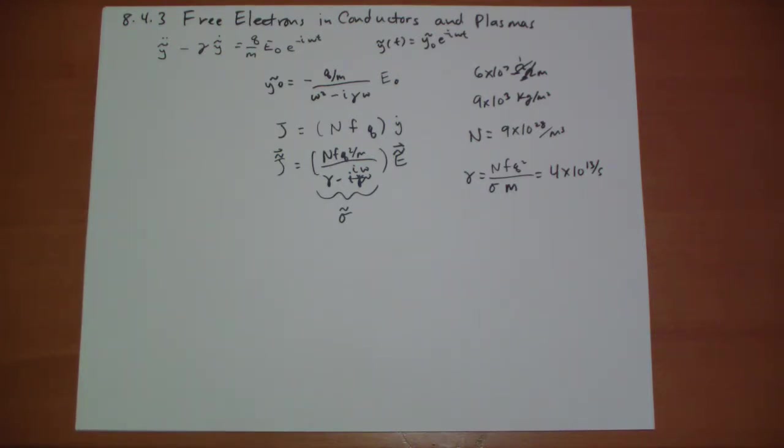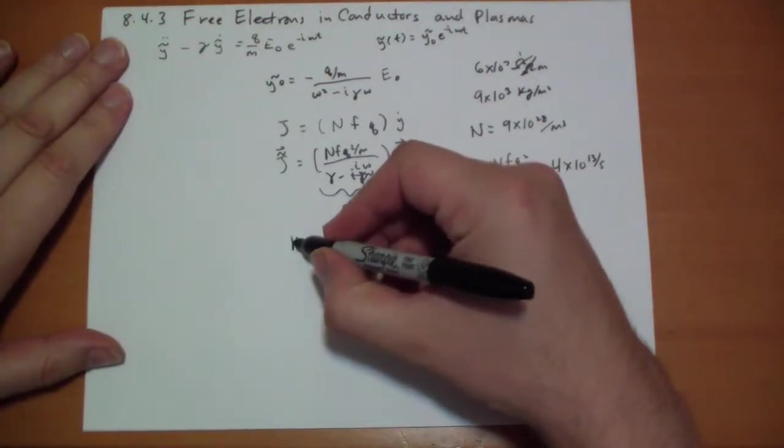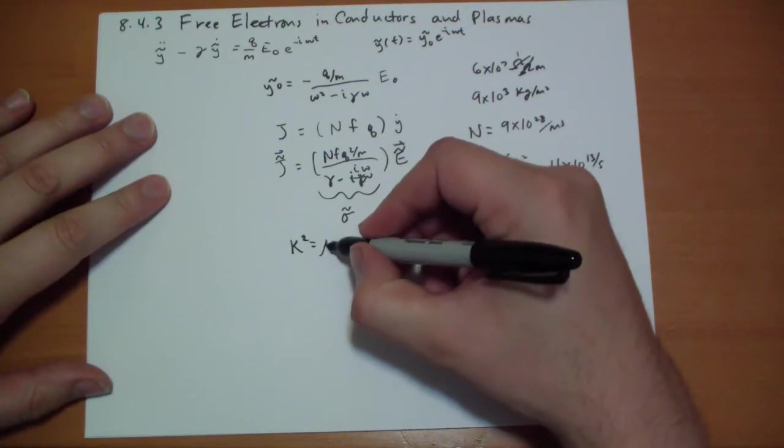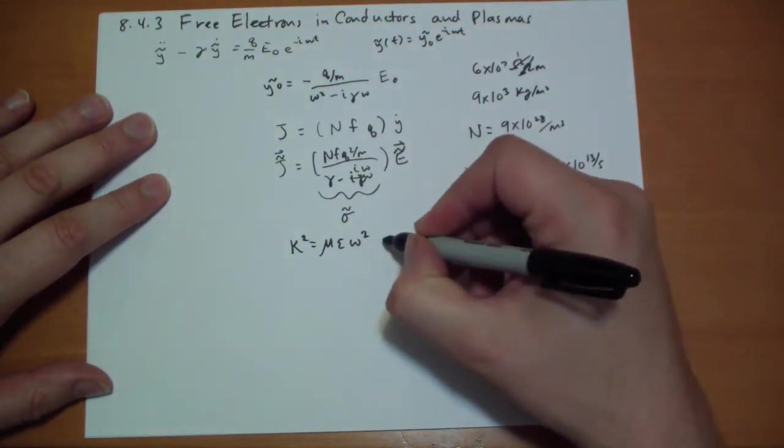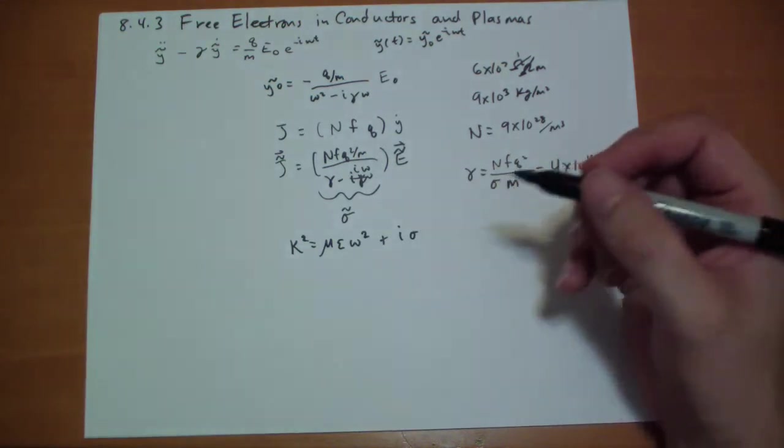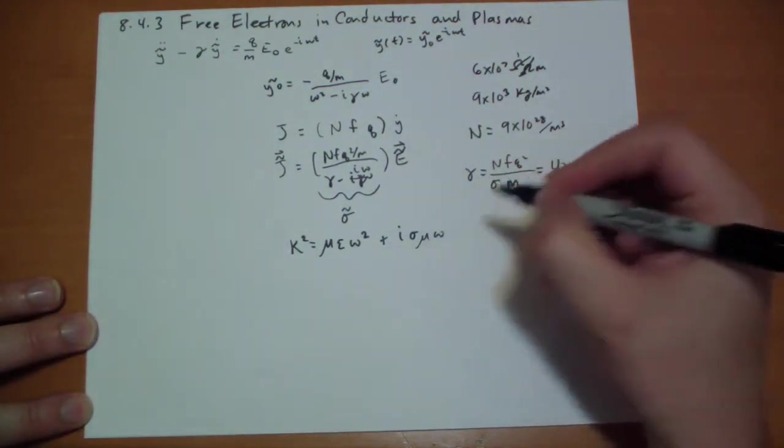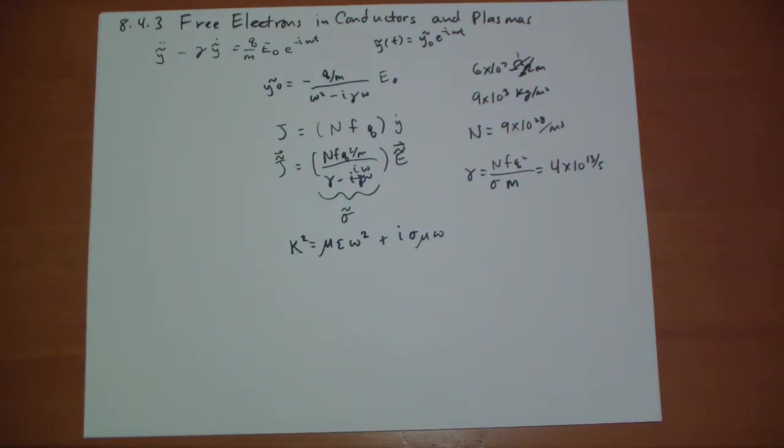This isn't surprising. Copper doesn't look like silver. It doesn't behave quite as well as silver does in reflecting visible frequencies back to us. So when we're talking about high frequencies, our kappa is going to be mu epsilon of the material omega squared plus i sigma mu omega. That's the kappa from the wave equation we got for conductors.